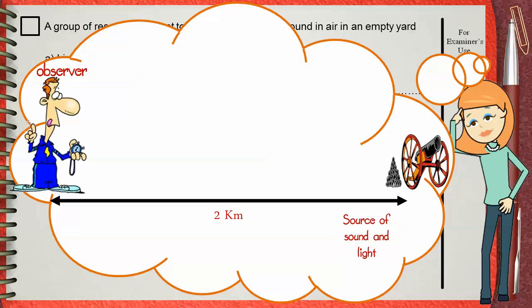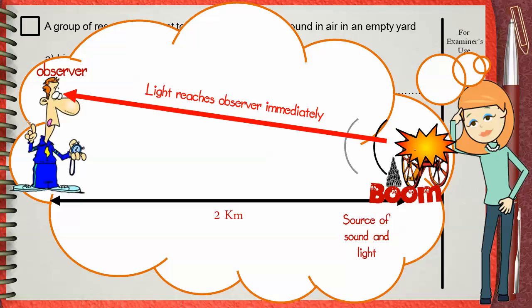Once this source shoots, it produces light and sound immediately together. Light reaches the observer immediately but sound comes later because the speed of sound is much slower than the speed of light.